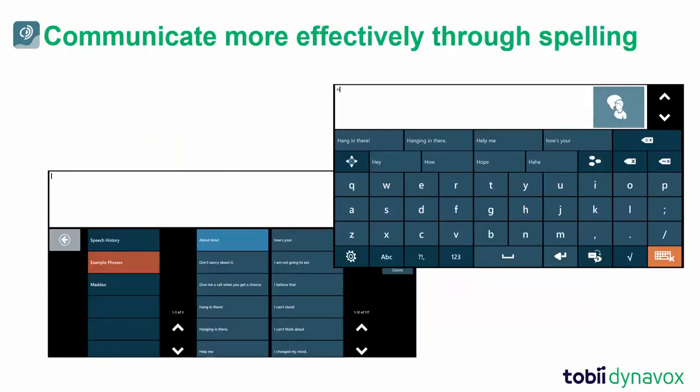Communicator 5 is designed to help individuals communicate more efficiently through spelling, word prediction, and pre-programmed phrases.